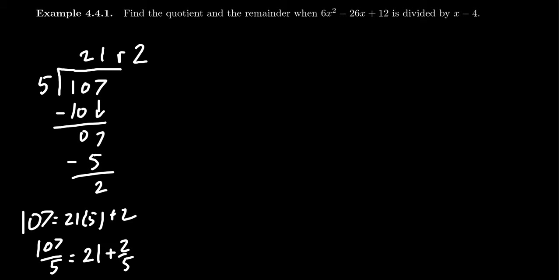When it comes to division of polynomials, the same principle is going to come into play. We're going to first take the numerator. So if we take 6x² - 26x + 12, this we want to think of as the numerator of the fraction that's going to be divided by x - 4, the denominator.